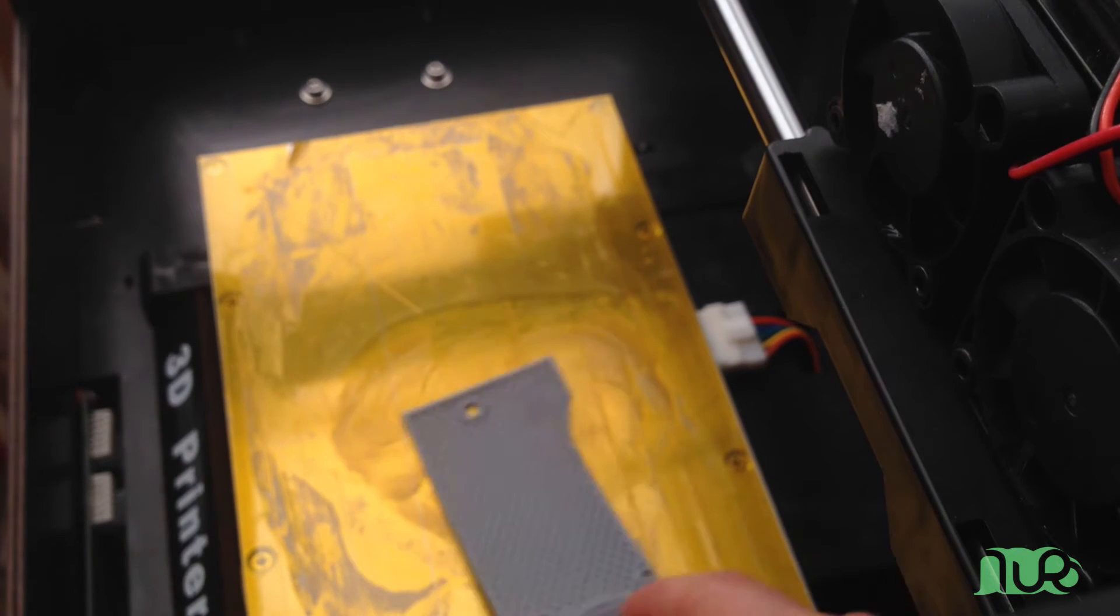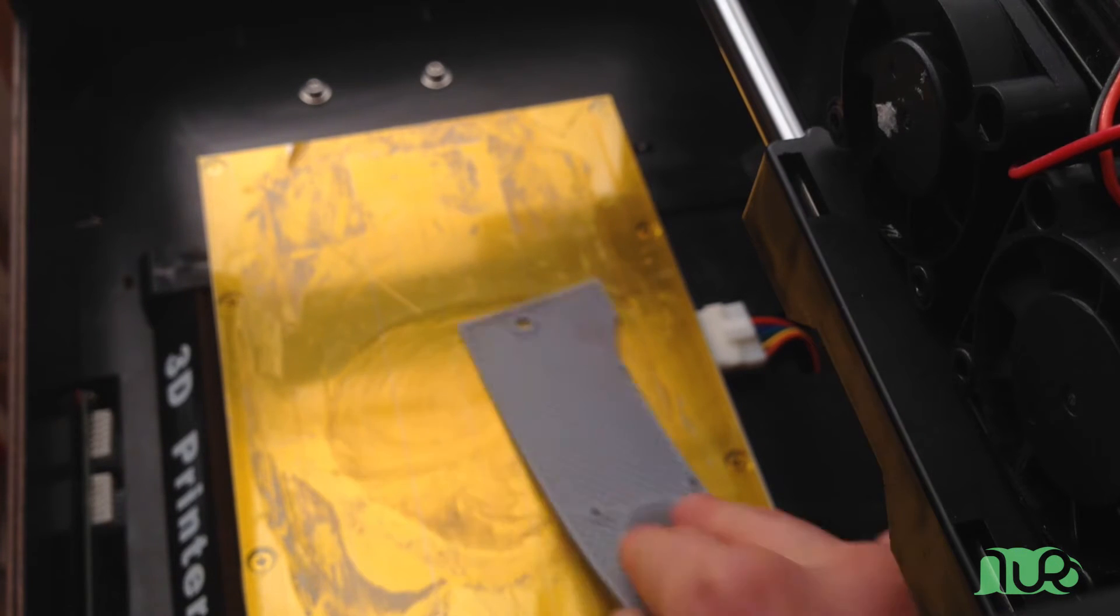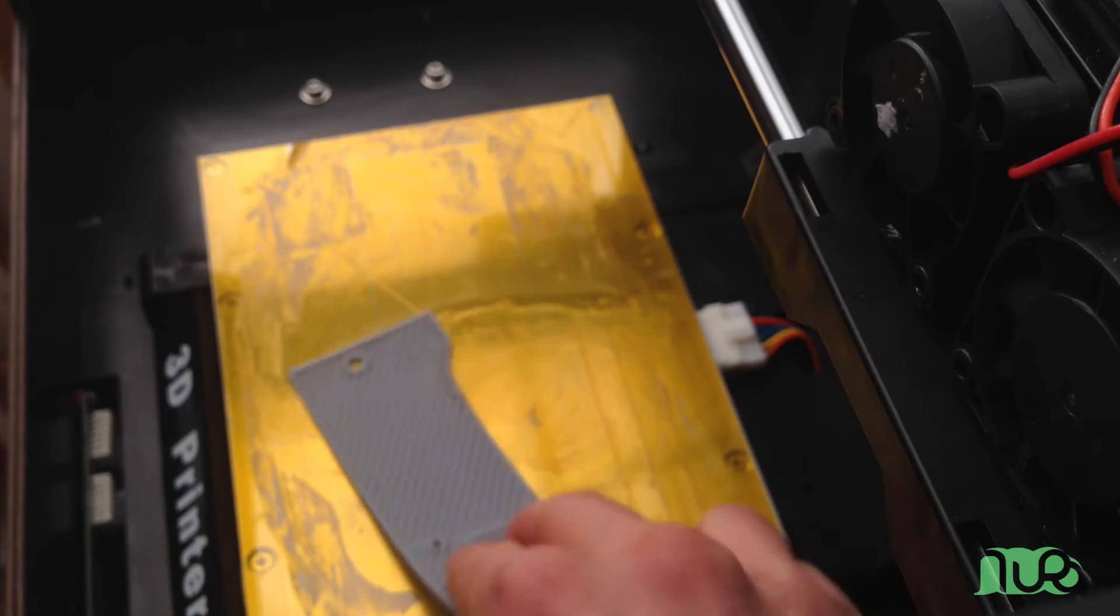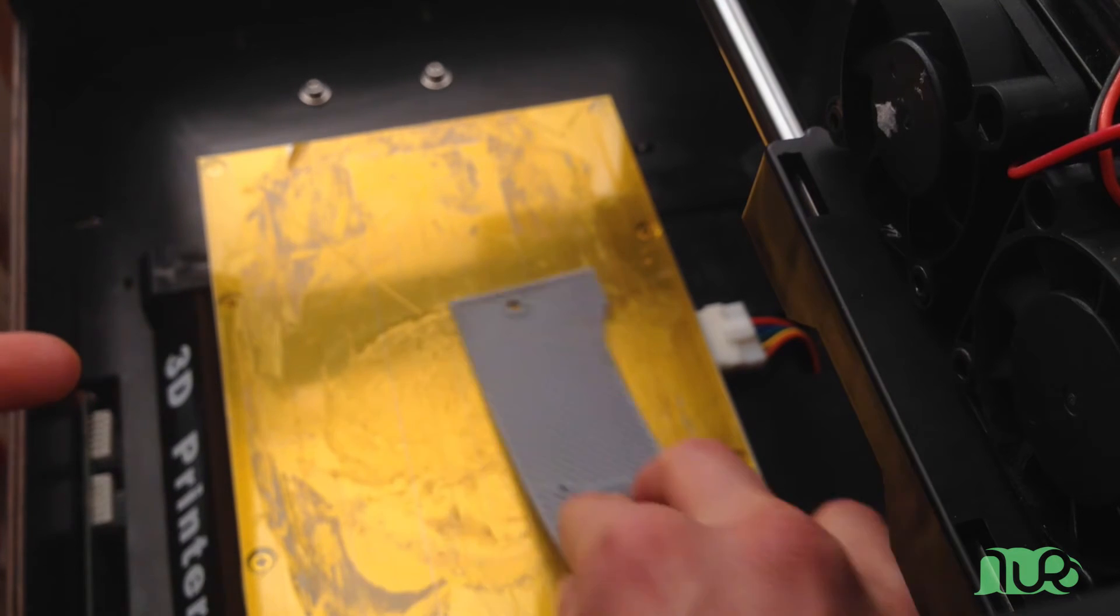And now I use the scrap piece and just rub it on the build platform basically. And as you may can see, the liquid acetone now gets kind of gray and it really gets sticky, and it's not liquid anymore, it's more viscous. And yeah, that's basically it, now the build platform is prepared.